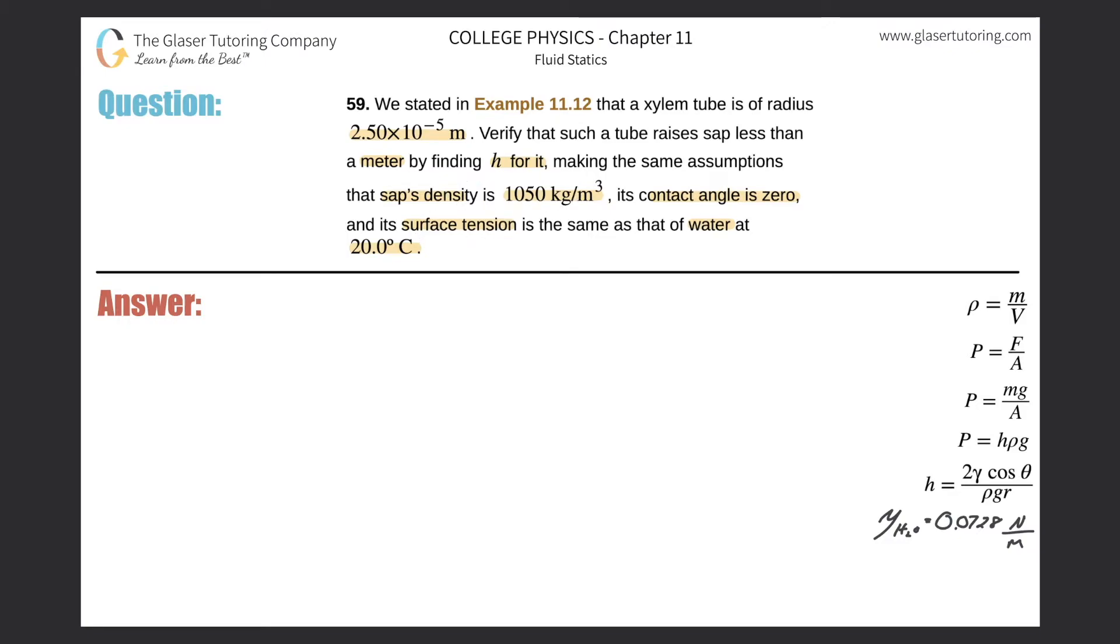It's right over here on the bottom right hand side. It says that the height a certain fluid will rise in a tube is a function of 2 multiplied by the surface tension gamma, multiplied by cosine of the contact angle, all divided by the density of the fluid multiplied by gravity multiplied by the radius of the tube.